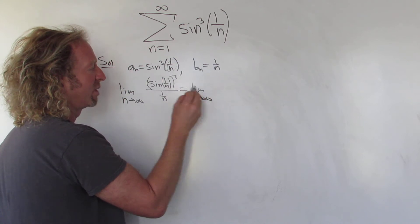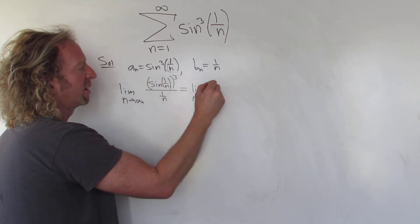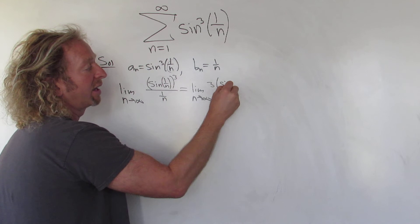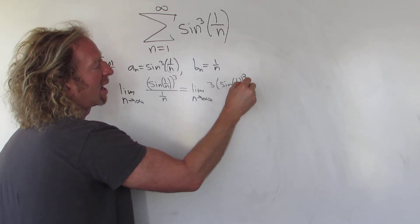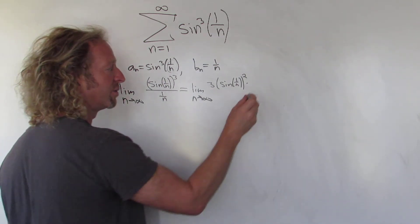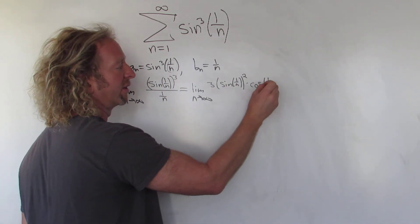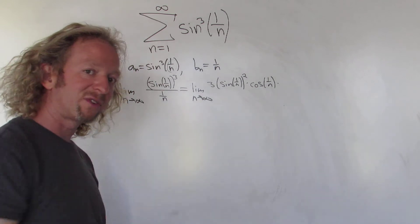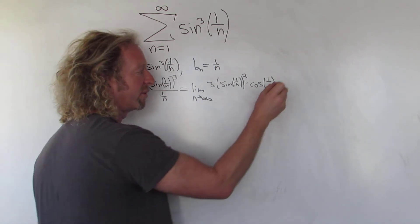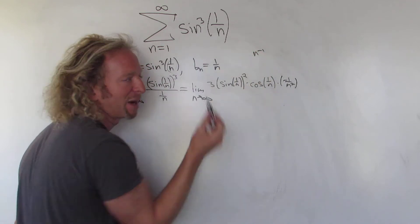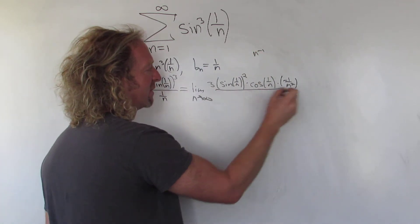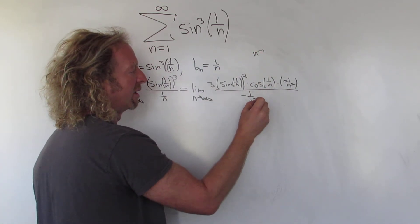So L'Hopital says we take the derivative. So taking the derivative here, you bring down the 3. And you have sine of 1 over n squared times the derivative of the inside. The derivative of sine is cosine. So you get cosine of 1 over n times the derivative of the inside. The derivative of 1 over n is negative 1 over n squared. I have that memorized. You can write it like this and use the power rule. On the bottom, you get the same thing, negative 1 over n squared. Boom, these cancel.